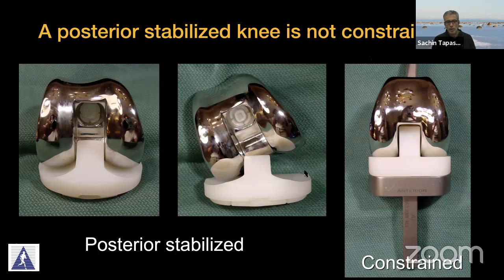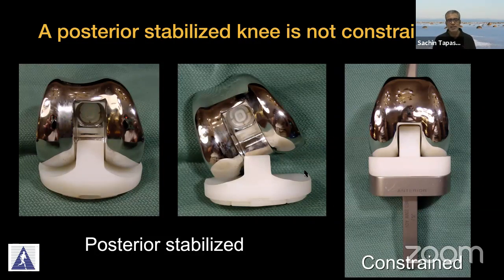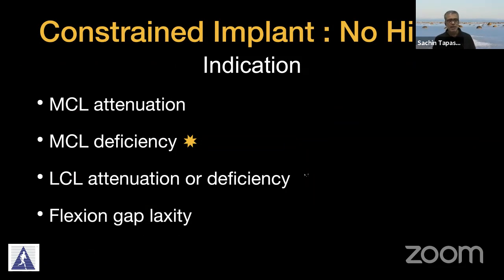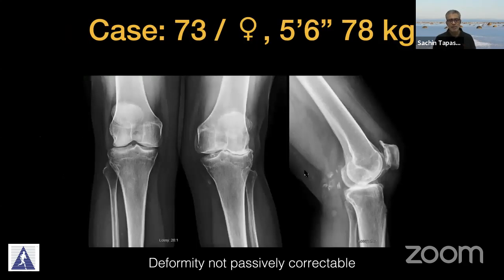It's very important to understand that a PS knee is not a constrained knee. A PS knee acts as a semi-constrained knee because the height of the post is not large enough to compensate for a defunct or non-functioning LCL or a compromised MCL. The main indication is MCL attenuation. If the MCL is completely deficient, you cannot use this non-hinged constrained implant. LCL attenuation or deficiency is the more common indication, and flexion gap laxity is also a role for this particular insert.